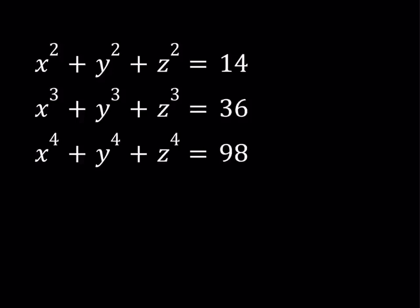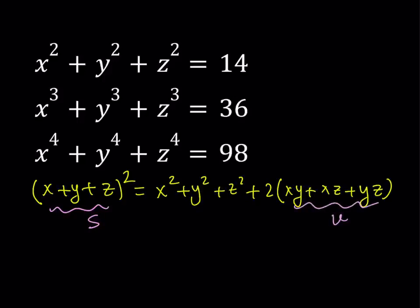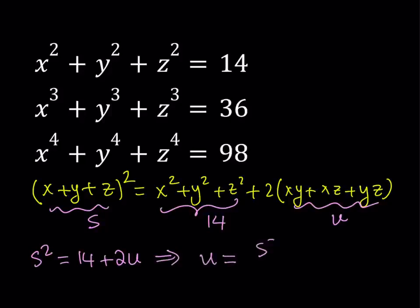Let's start by taking x plus y plus z and squaring both sides. That gives x squared plus y squared plus z squared plus two times the quantity xy plus xz plus yz. This should remind you of Vieta's formulas. Let's use some variables: call x plus y plus z as S for sum, and call xy plus xz plus yz as U. So S squared equals 14 plus 2U, which lets us isolate U as S squared minus 14 over 2 — something we'll use later.